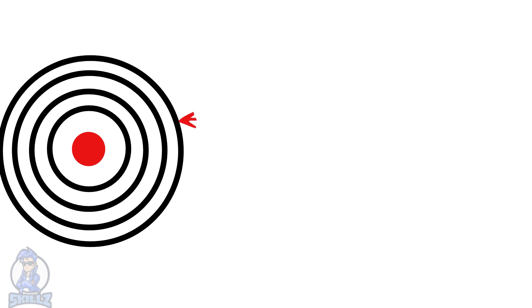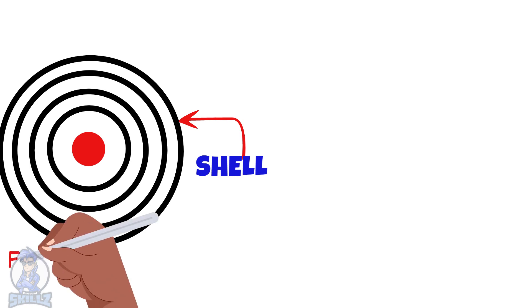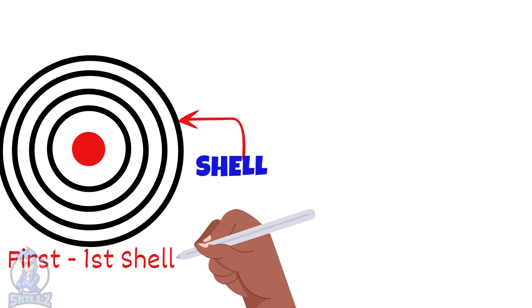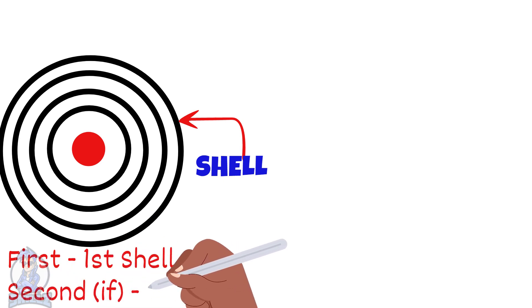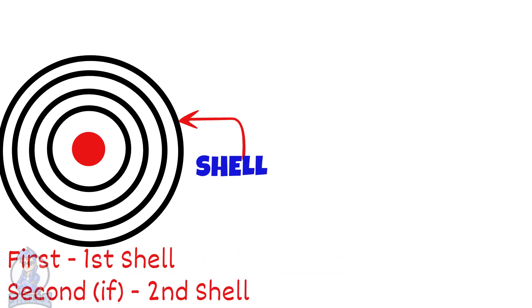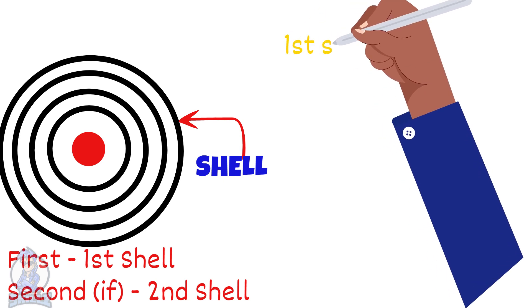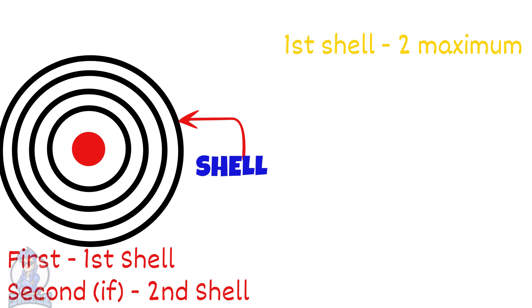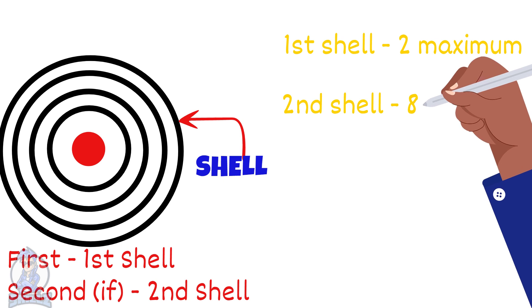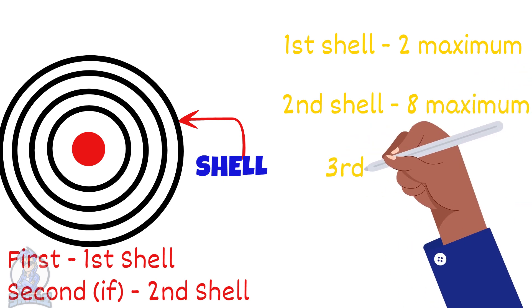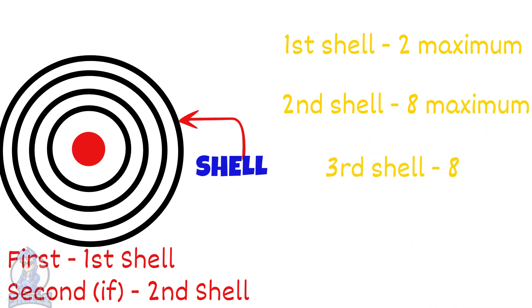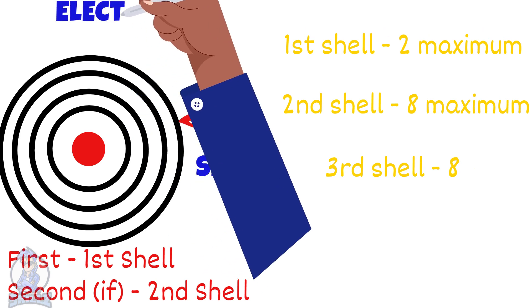Electrons are located in the shells of the atom. Each shell can hold a maximum amount of electrons. The first electrons fill in the first shell, and if there are more, they fill the second shell and so on. The first shell can house a maximum of 2 electrons. The second shell has room for only 8 electrons, and the third shell can also house 8 electrons.